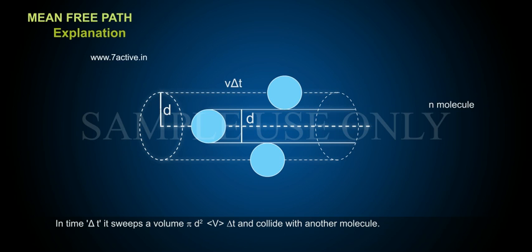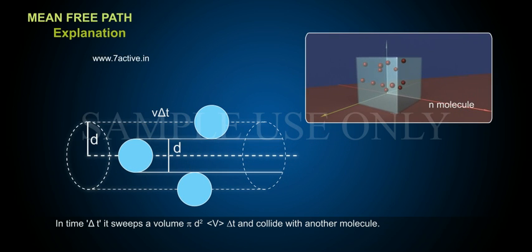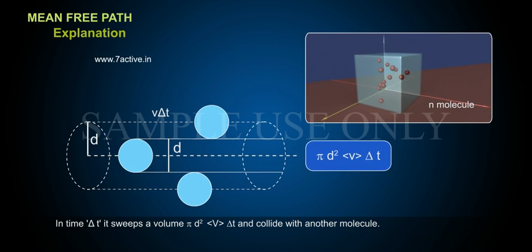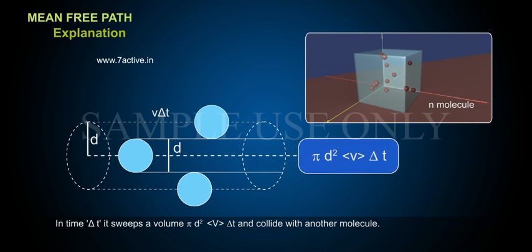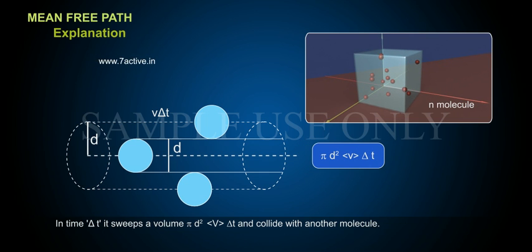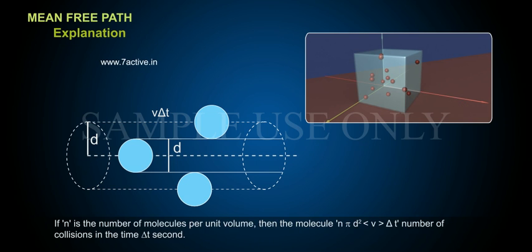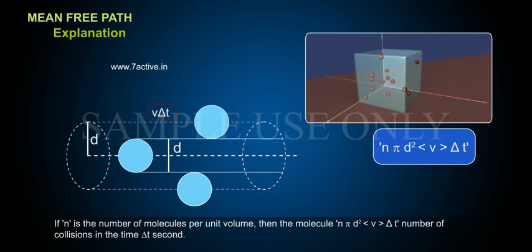In time delta t it sweeps a volume pi d square v delta t and collide with another molecule. If n is the number of molecules per unit volume, then the molecule suffers n pi d square v delta t number of collisions in the time delta t seconds.